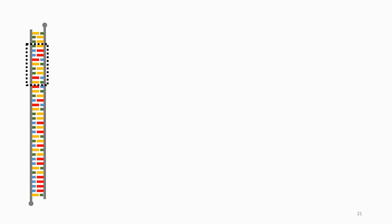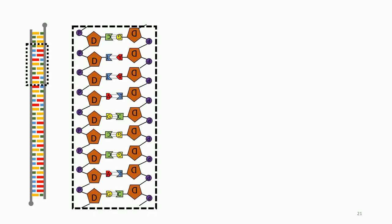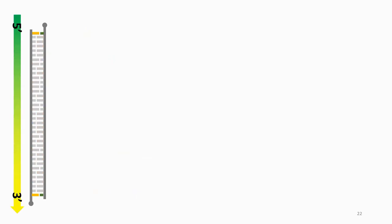If you zoom in on the DNA molecule, you can see G-C and A-T pairs. The hydrogen bonds differ — G and C have three bonds, A and T have two bonds. You also need to know the physical and chemical properties: DNA is synthesized in the 5' to 3' direction.